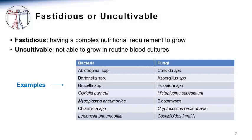There are several fastidious microorganisms, that is, organisms that have a complex nutritional requirement to grow, and uncultivable microorganisms, those that cannot or are difficult to grow on routine cultures. Examples of bacteria in this category include Abiotrophia, Bartonella, Brucella, and others listed here.